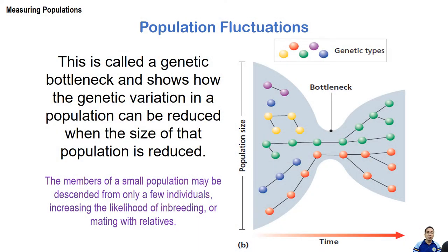This is called a genetic bottleneck, which shows how genetic variation in a population can be reduced when population size decreases. Smaller populations come with plenty of risk — their members may be descended from only a few individuals, increasing the likelihood of inbreeding or mating with relatives. That results in low genetic variation, making it harder for the population to adapt to environmental changes because bad genes tend to be conserved. The population can even be wiped out if no member with a unique trait can survive environmental pressures.